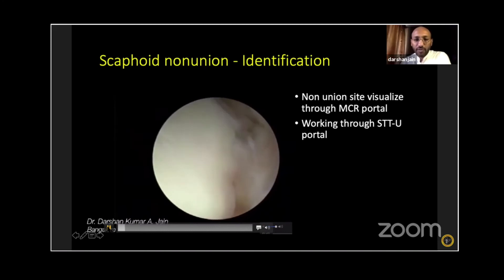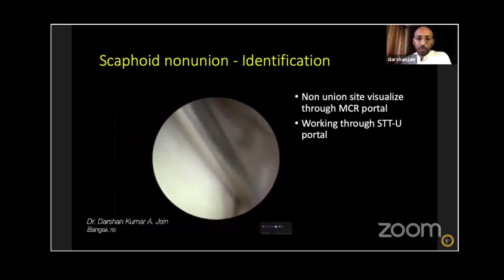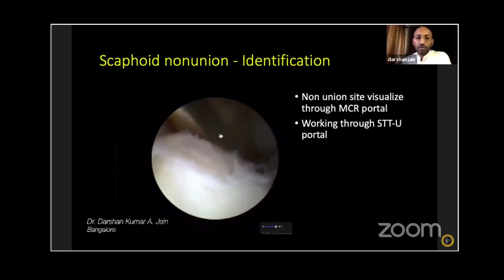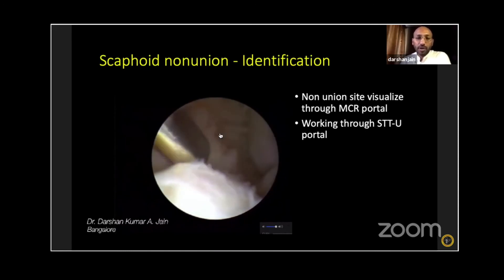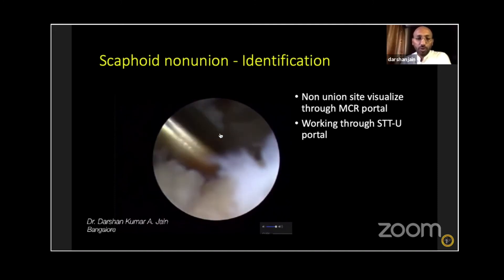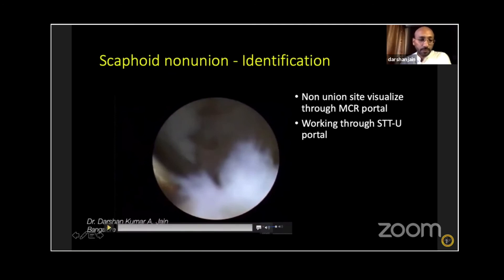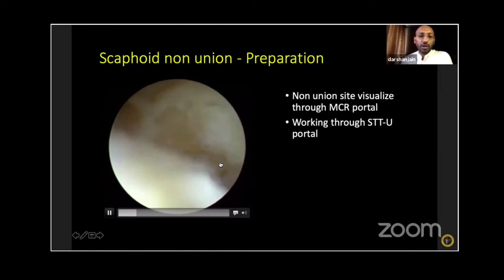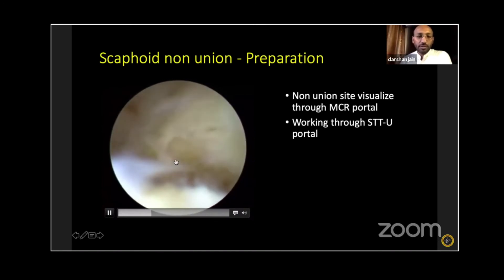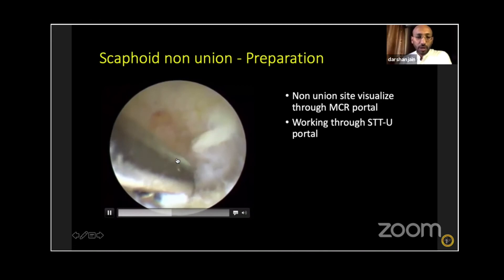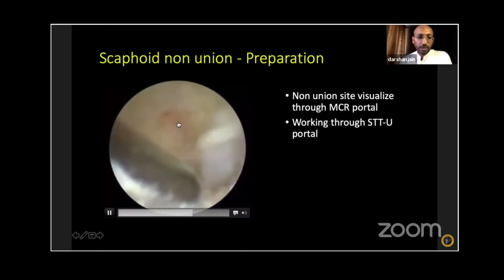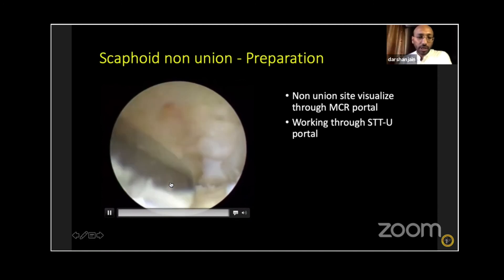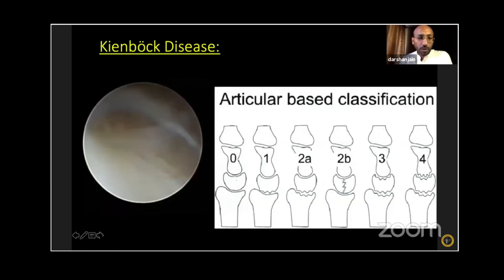For scaphoid non-union, you visualize through the MCU or MCR portal with the probe through the STTU portal. An accessory portal is created along the radial border of the index metacarpal just proximal to the MCR portal to work through the non-union site. You use a shaver and burr to freshen the non-union site. You can see the distal pole and proximal pole of the non-union site, and the radiocarpal joint is visible through this interval.